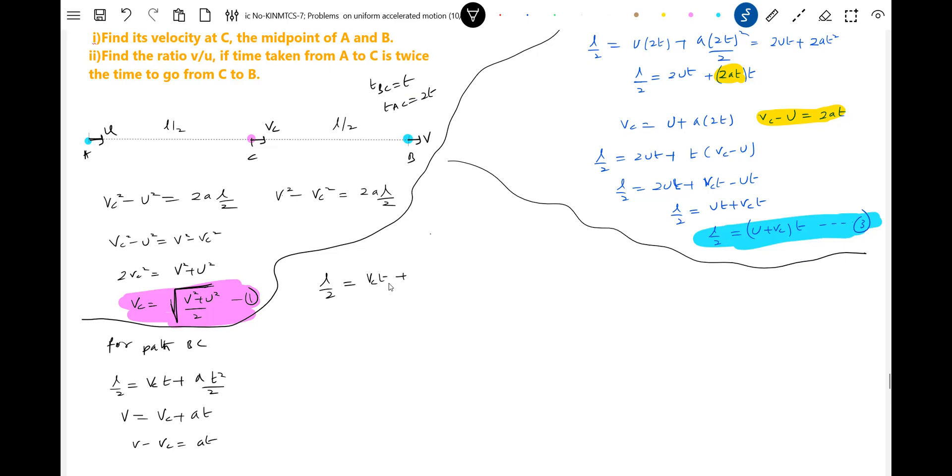This equation we can write it as vct plus vt by 2 minus vct by 2. Final equation will be vc plus v, t by 2. So there is equation 1, this is 2, this is 3.